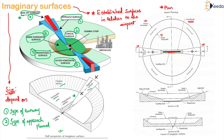If you cut a section AB, the approach is here, this portion is conical, this is your takeoff climb, and whatever you have is horizontal surface — this is the outer and this is the inner surface, with a landing strip here. If you cut section CD, this is outer, this is conical, this is your transitional surface with its shape visible, a small portion of landing strip, and then inner horizontal and outer horizontal. So this gives you the plan and section in both directions, and the 3D view of your imaginary surface.